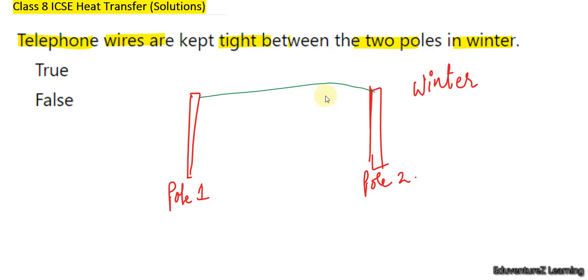During winter the metals or the materials contract, or the wires contract, means they tend to lose length—their length decreases during winter. But in summer their length increases due to the expansion during summer.